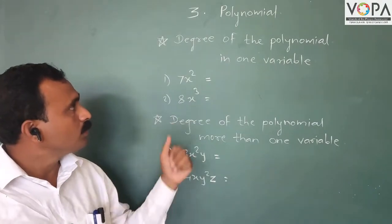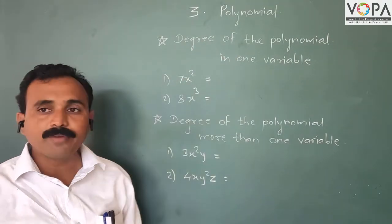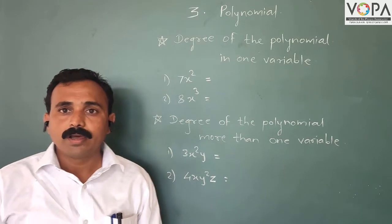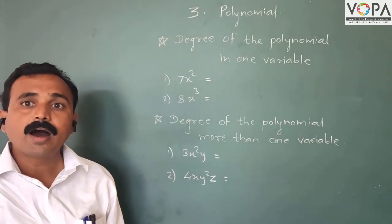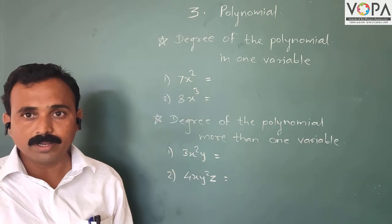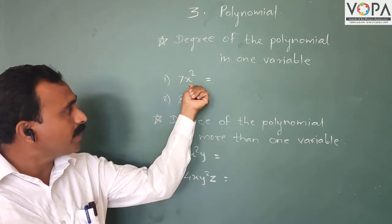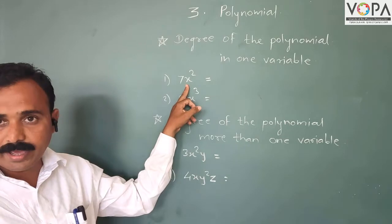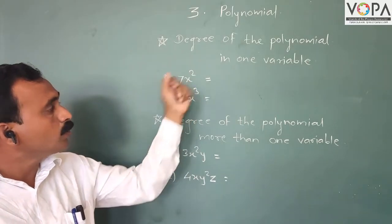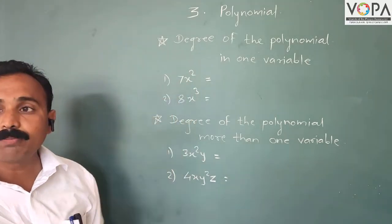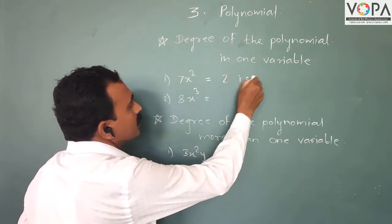Today we look at the degree of a polynomial in one variable. Degree means the highest index of that variable. For example, in 7x², the variable is x and the index is 2, therefore 2 is the degree of the polynomial.